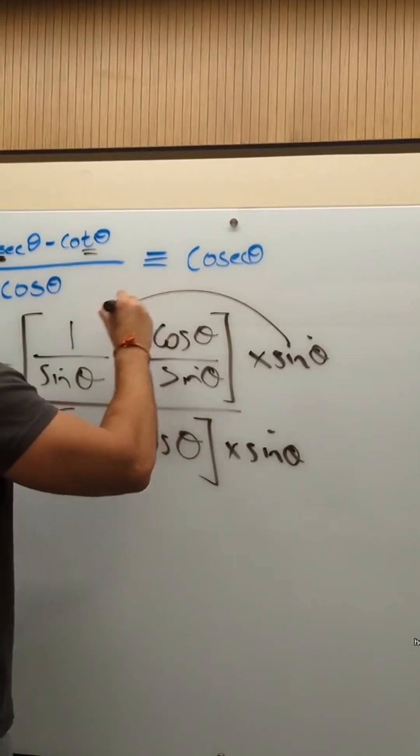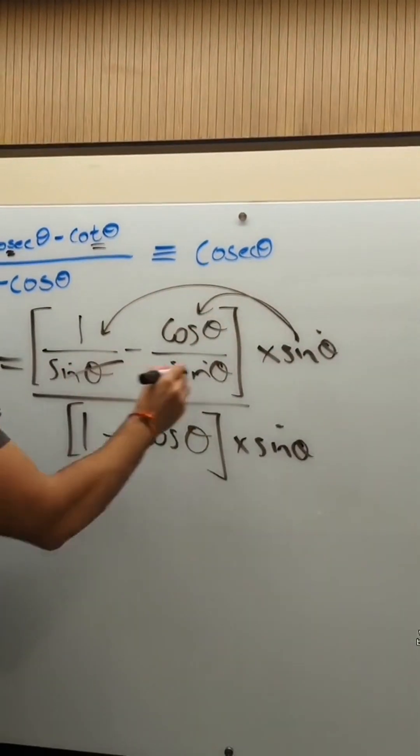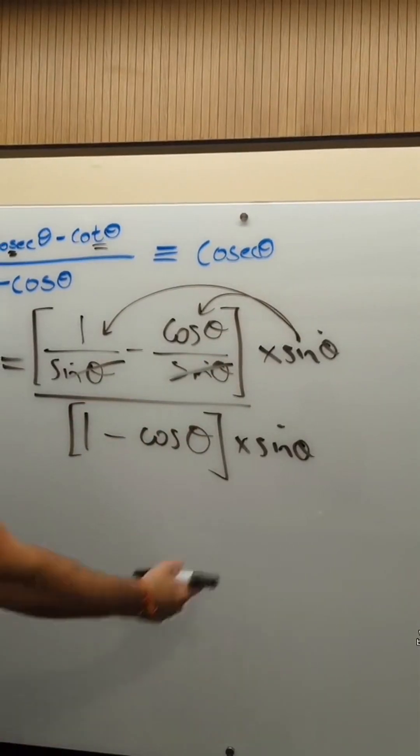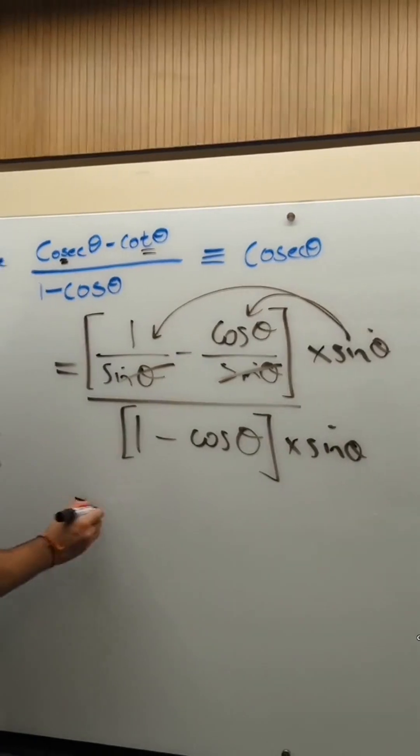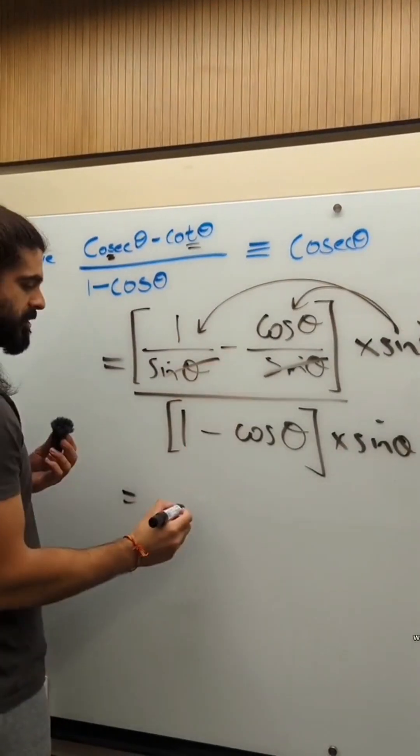Here, when you expand this in, what ends up happening is both of these denominators end up cancelling. Here, do not expand it in because things might cancel. We would just be left with 1 minus cos theta on the top.